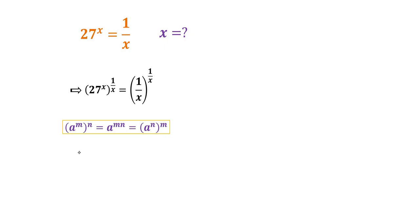So we apply the rule a to the power of m then to the power of n is equal to a to the power of m times n is equal to a to the power of n then to the power of m.